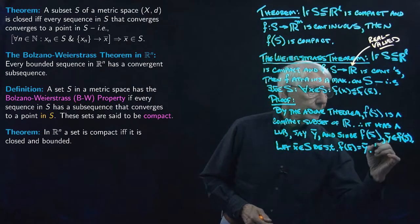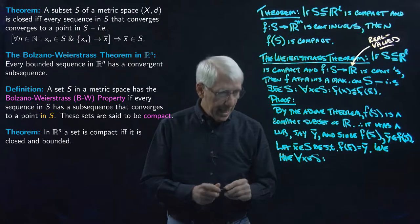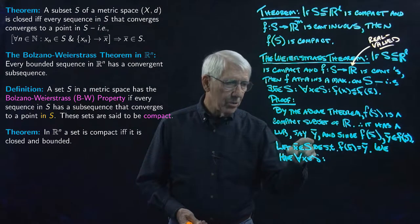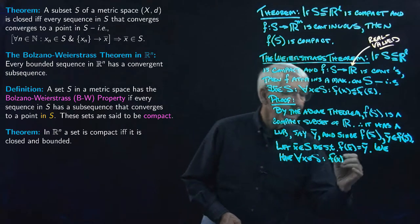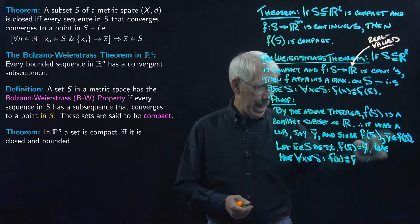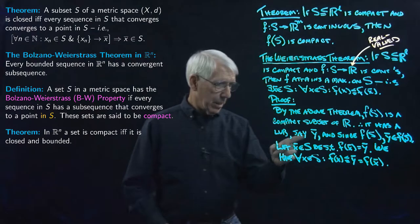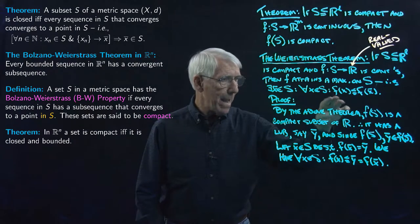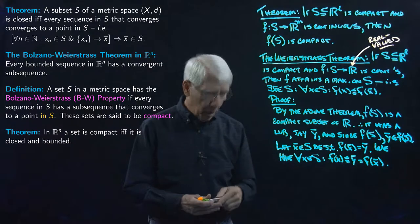For every X in S, F(X) is in F(S), and Y-bar is the least upper bound of F(S), so F(X) ≤ Y-bar for every X in S. And Y-bar equals F(X-bar). So X-bar exactly fits the definition of being a maximizer of F on S: for every X in S, F(X) ≤ F(X-bar). That's it — a simple proof.